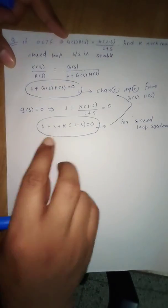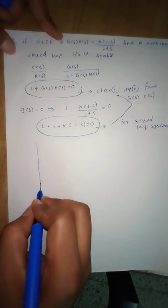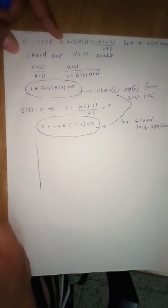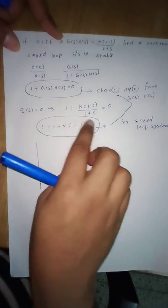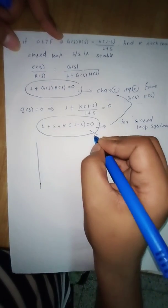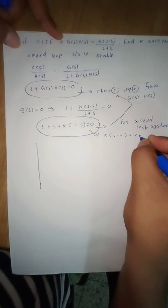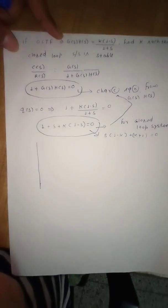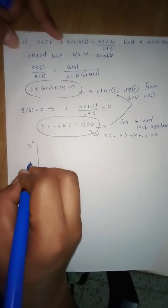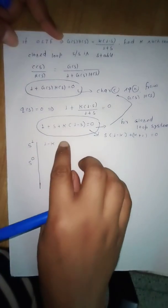Let us form the Routh array for the given characteristic equation. First, we will write all s terms. After rearranging, the characteristic equation becomes s·(1 - k) + (k + 1) = 0. So the first row corresponds to s to the power 1, with coefficient (1 - k).